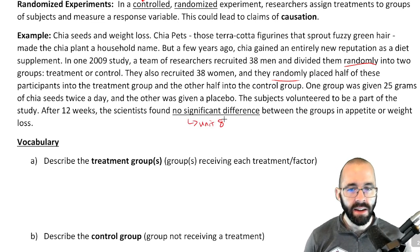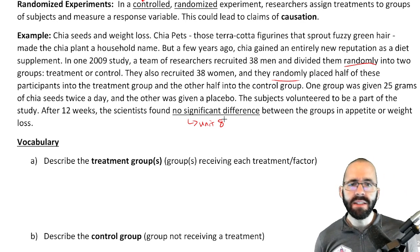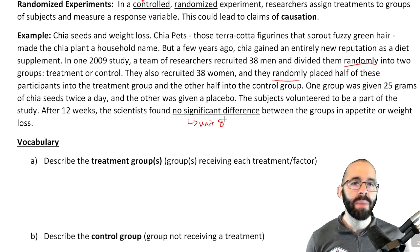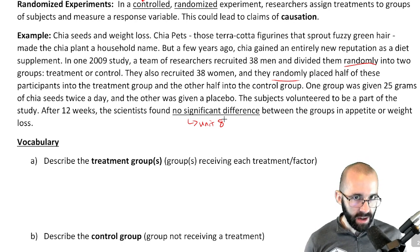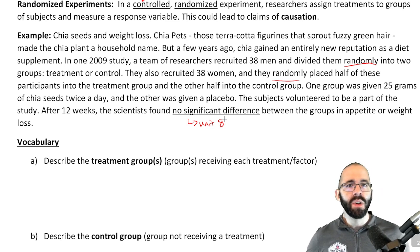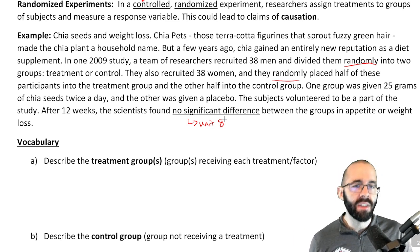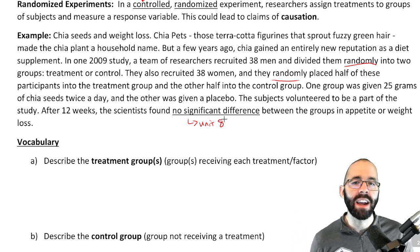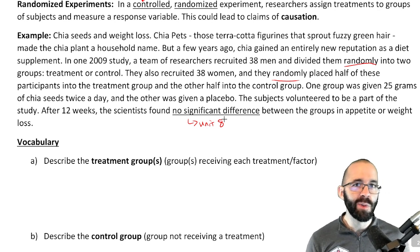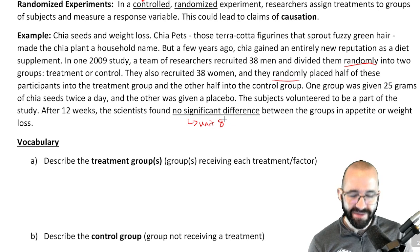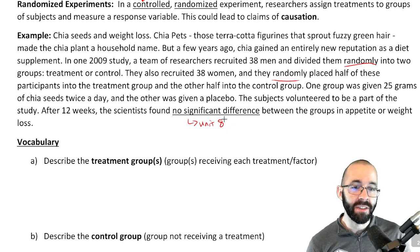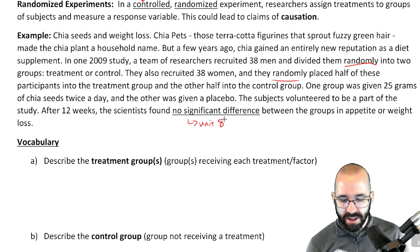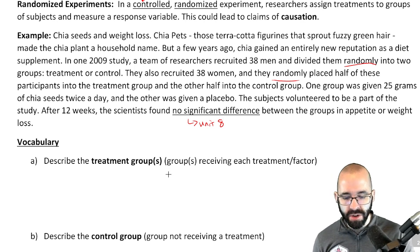'No significant difference' is an important term we'll discuss more in Unit 8. Because things are random, if one group had a one-pound weight loss and the other had a 1.1-pound weight loss, those are technically different numbers — but you have to think carefully about whether they're actually different or just due to random chance. We'll use new math to decide, which is part of inferential statistics — one of my favorite units.